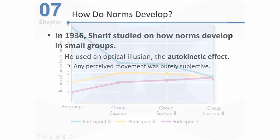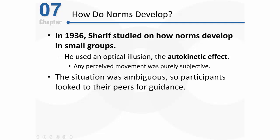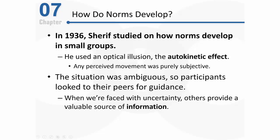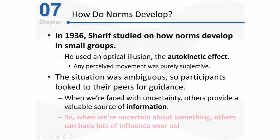What was going on in these people's minds? The situation was highly ambiguous, and in ambiguous situations participants look to their peers for guidance. When we're faced with uncertainty, other people provide a valuable source of information — they help us interpret what's going on. The take-home message: when we're in an ambiguous situation, other people can have a great deal of influence over us.